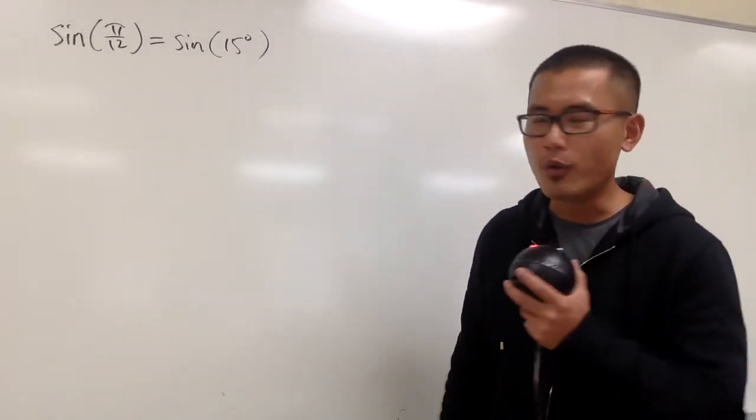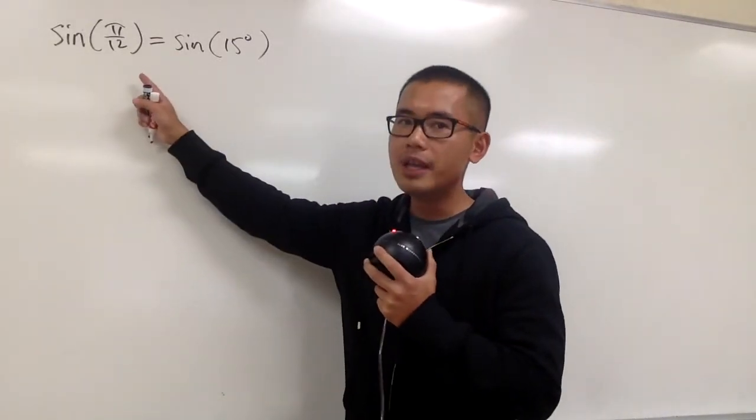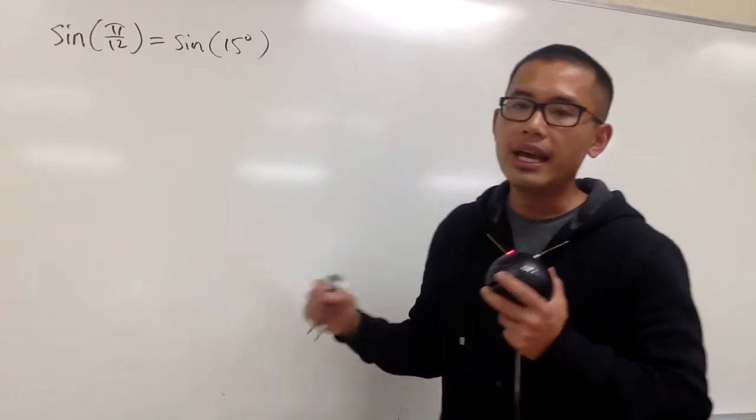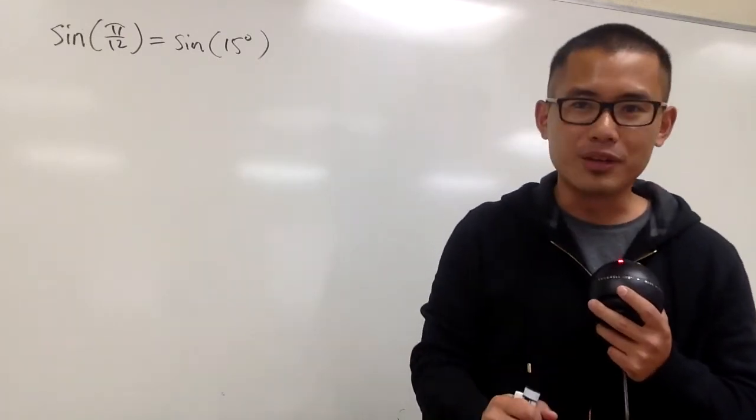I'm going to show you how to figure out the exact value for sine of pi over 12, namely sine of 15 degrees. In this video, I will show you how to use the half angle formula for this.